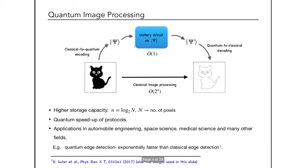Starting with quantum image processing: there are three main steps. First, you encode a classical image as a quantum state, denoted psi. Then you run this input state psi through a quantum circuit — a set of unitary operators — producing an output state psi prime. Finally, you transform this output state to acquire particular classical information, depending on what your image processing task requires.